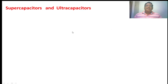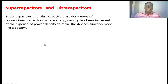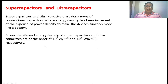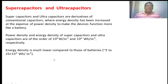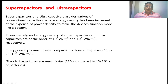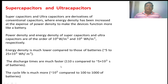Supercapacitors and ultracapacitors are both derived from the conventional capacitor. The difference between supercapacitors and ultracapacitors compared to the conventional capacitor is in terms of power density and energy density. The power density and energy density of supercapacitors and ultracapacitors are of the order of 10 to the 4 to 6 watts per meter cube. The power density of supercapacitors is lower compared to the conventional capacitor. The energy density is much lower compared to batteries, around 5 to 25 times 10 to the 4 watts per meter. The discharge time is much faster compared to batteries, and the cycle time is much lower compared to batteries.